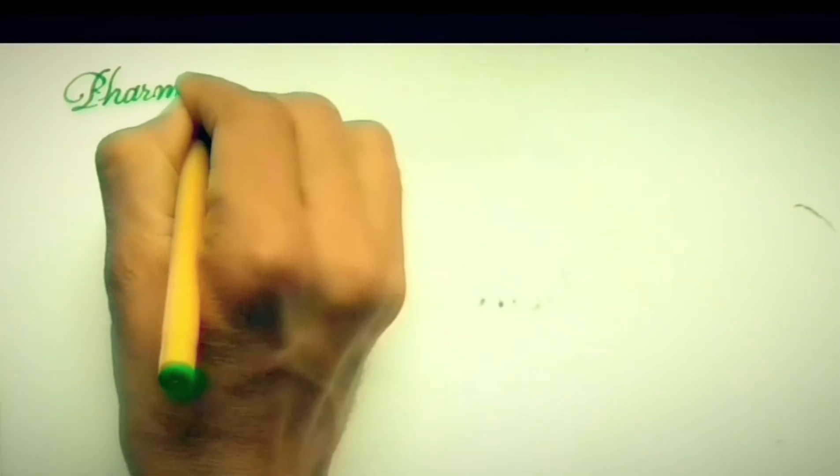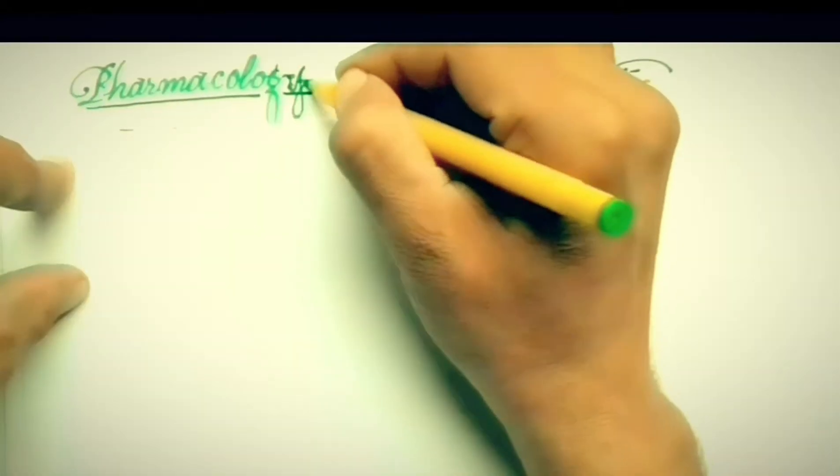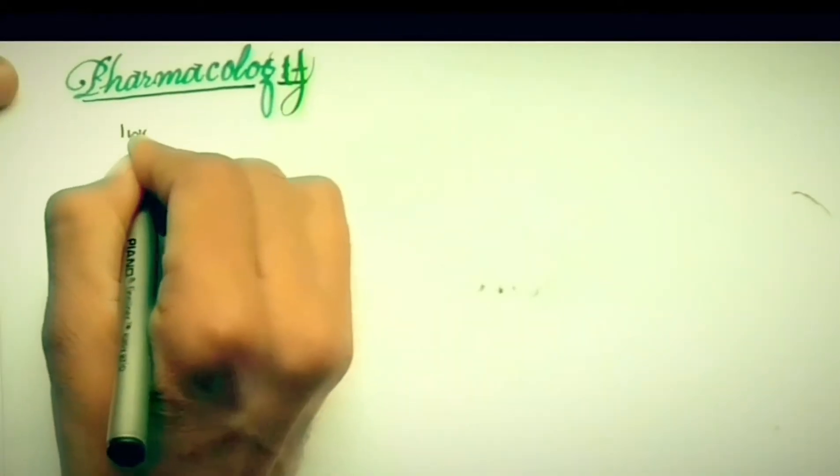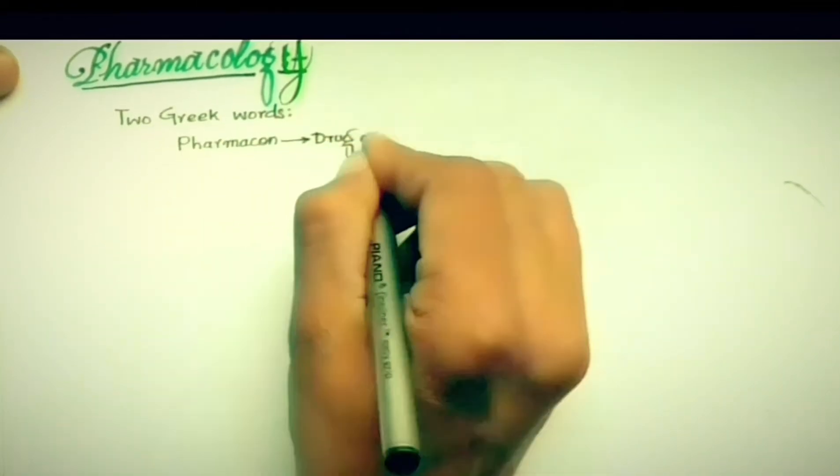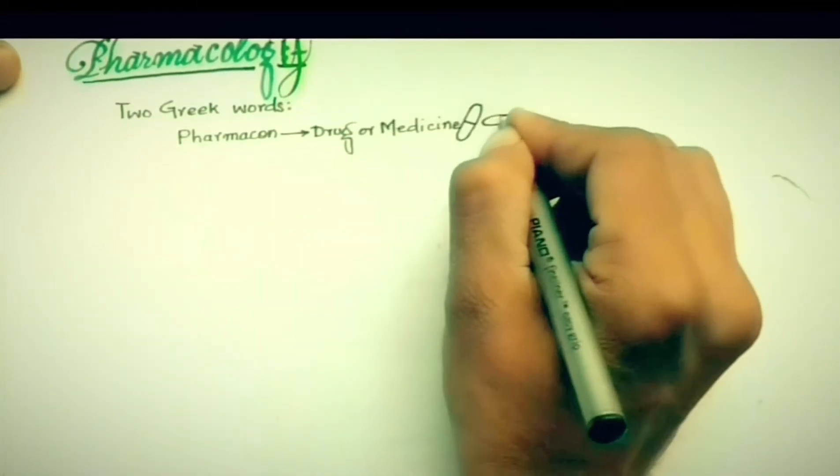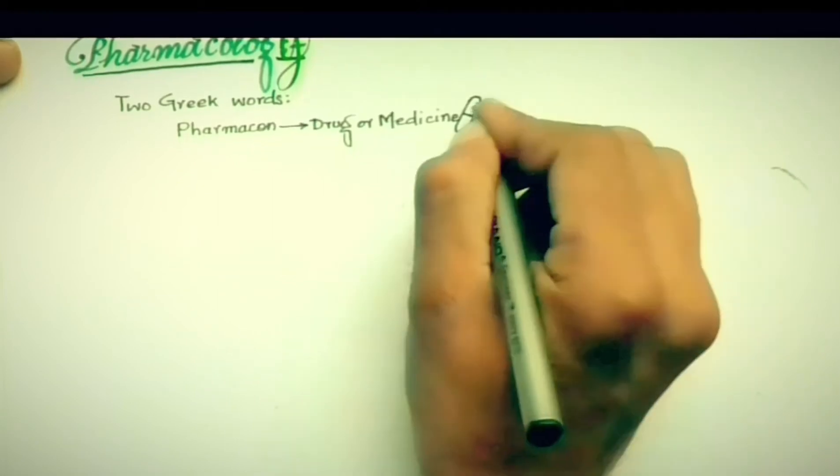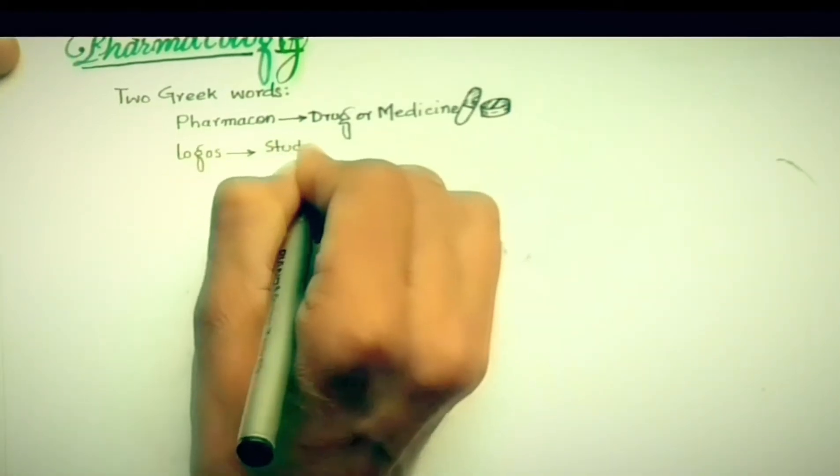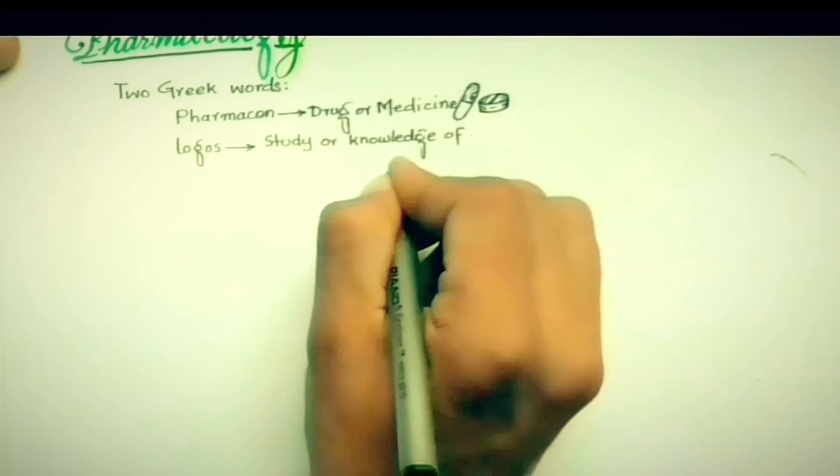First of all, what is pharmacology? The word pharmacology is derived from two Greek words: pharmacone and logos. Pharmacone means drug or medicine, and logos means study or knowledge of.